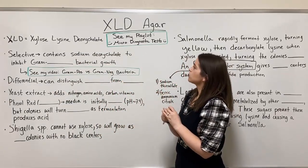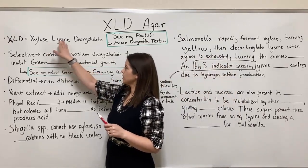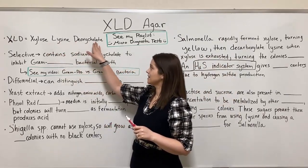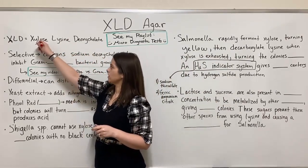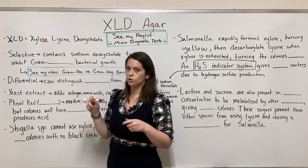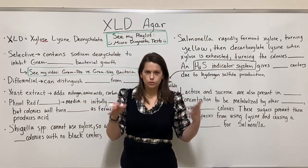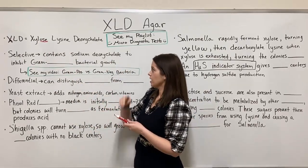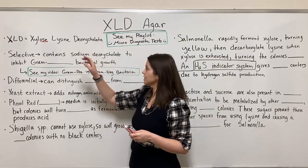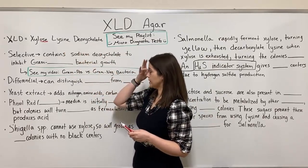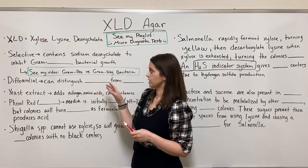So let's talk about XLD Agar. XLD stands for xylose lysine deoxycholate. You should recognize that xylose ends in '-ose,' so it's a sugar — just like sucrose or fructose, but with a different structure. Lysine is one of our amino acids, and deoxycholate is a different chemical compound. So that's what XLD stands for.